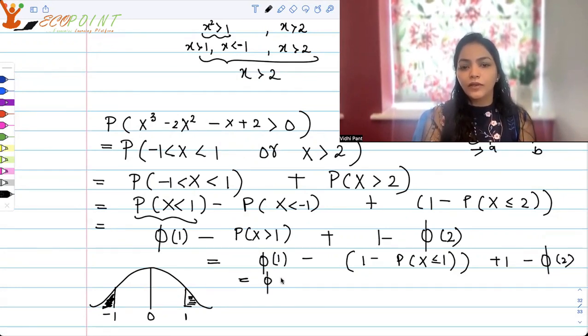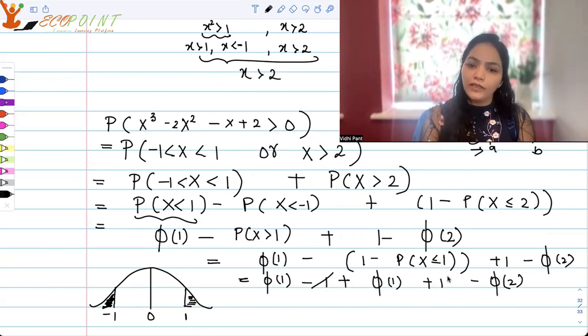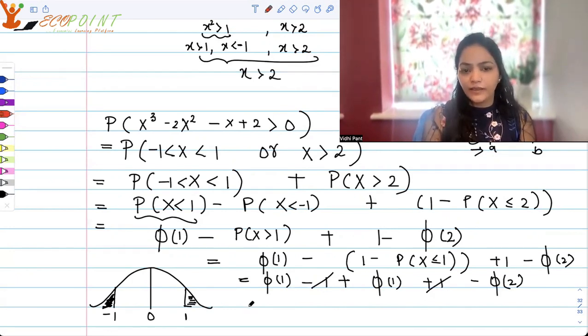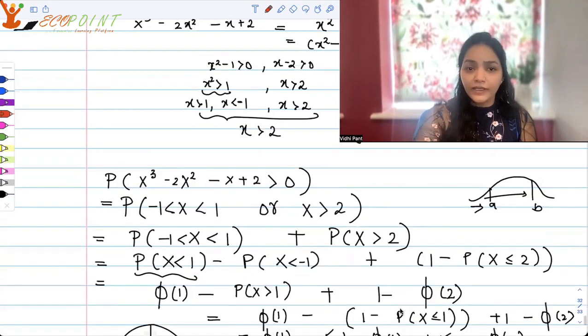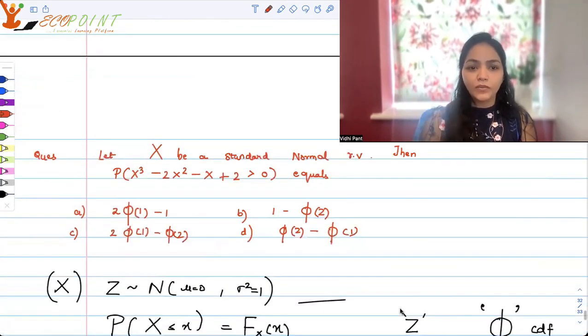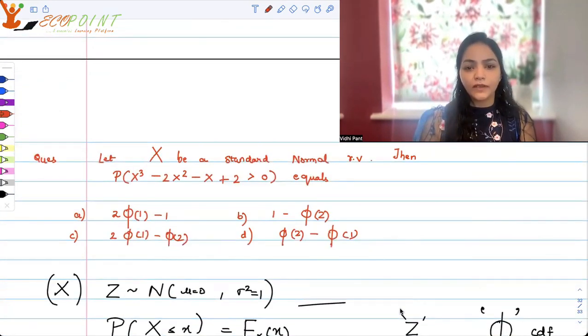Now this becomes phi(1) minus, I can write this down as 1 - probability X ≤ 1 plus I have 1 - phi(2). So this turns out to be phi(1) - 1 + phi(1) + 1 - phi(2). So 1 and 1 cancels as you can see here. And what are we left with? We are left with twice of phi(1) - phi(2). Do we have any such option available? Twice of phi(1) - phi(2). Yes, the option is there. It is C option and that should be the correct option.